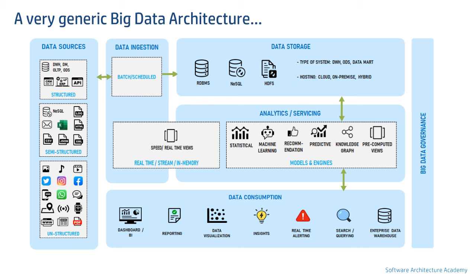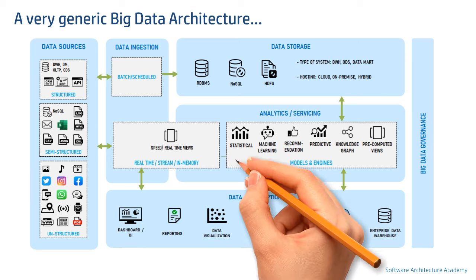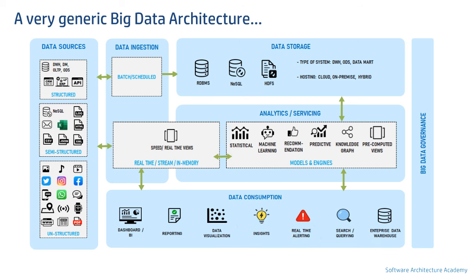Now let's talk about real-time or stream processing, which makes this a big data architecture in the truest sense. The first flow is when a request is catered in real-time by in-memory processing with the help of computing a real-time view. This typically uses capabilities hosted at the analytical layer but can function without them for a limited number of use cases where speed is everything. A good example of such a use case where the analytical layer capability is not required is real-time alerting.